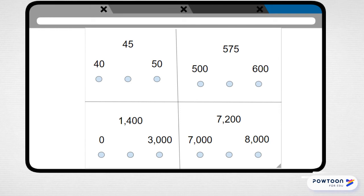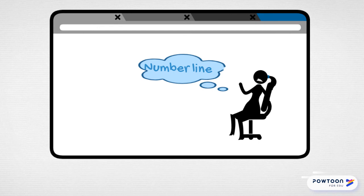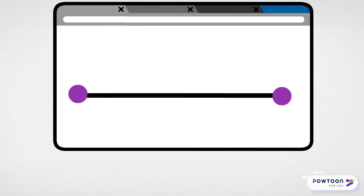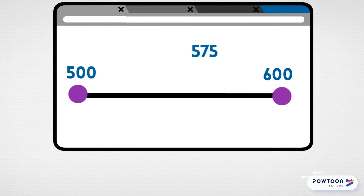Let's practice with one more question — the one with 575 on top, 500, and 600. This question is asking if 575 is closer to 500, closer to 600, or right in the middle. Do you remember the best way to figure this out? That's right — we just imagine a number line in our head. So I picture a number line with 500 on one side and 600 on the other, and try to think of where 575 would be. I could try counting by ones to figure it out, but that would take too long. Instead, I'm going to count by 25s in quarters.